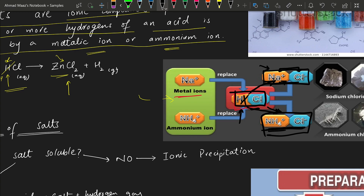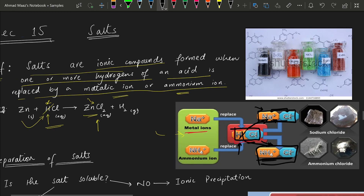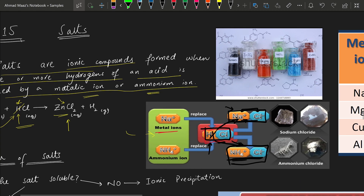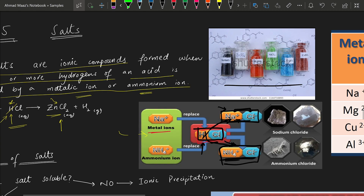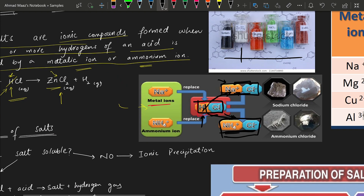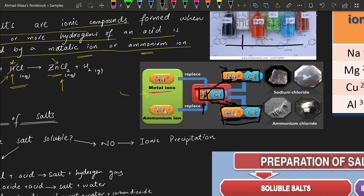That is essentially the definition of a salt: when one or more hydrogens of an acid are replaced by a metallic ion or an ammonium ion, a salt is formed. We have different types of salts — for example, zinc sulfate, copper sulfate, cobalt sulfate, sodium chloride, and ammonium chloride — many of which we encounter in daily life.